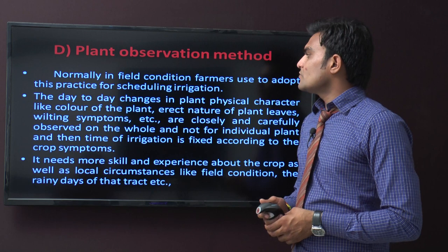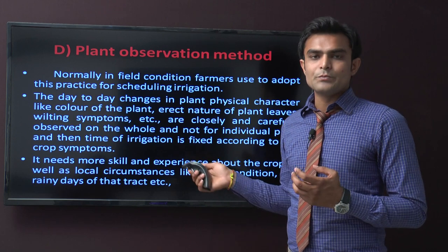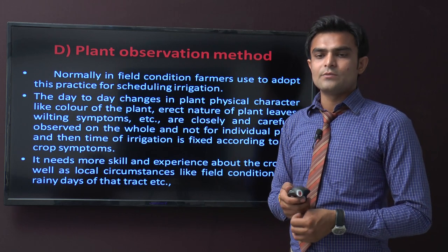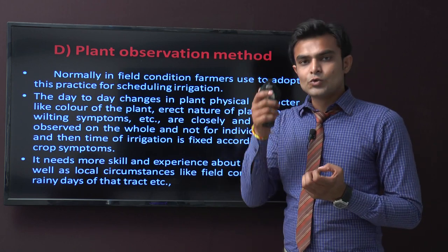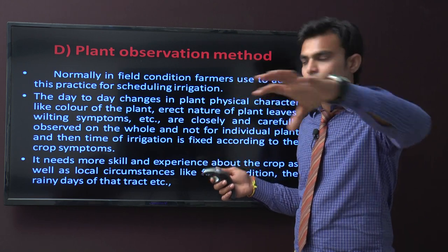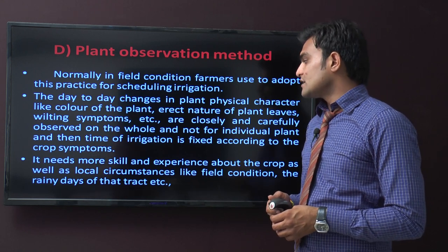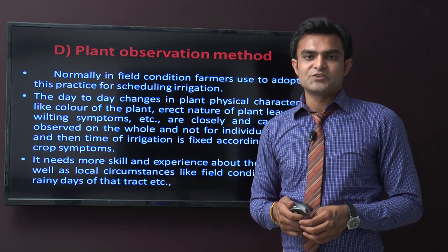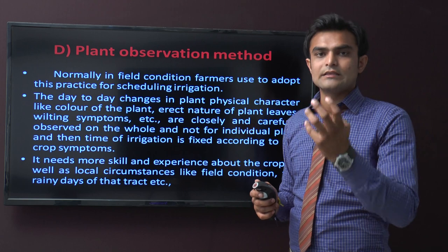The plant observation method is one that farmers normally use in field conditions for irrigation scheduling. It is simple and all farmers use this method. Day-to-day changes in plant physical characteristics — color of the plants, erect nature of the plants, leaves, wilting of plants, and shoot status — are closely and carefully observed over the whole field area, not for individual plants. Then the time of irrigation is fixed according to the crop system. It needs more skill and experience since we are just observing the field to decide on the trace condition.